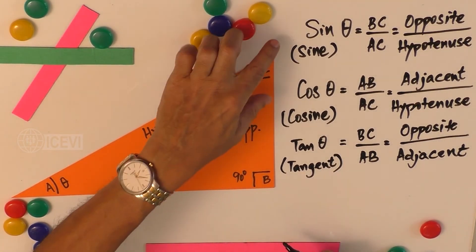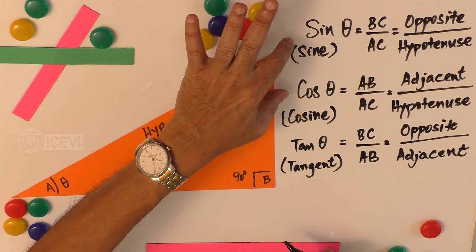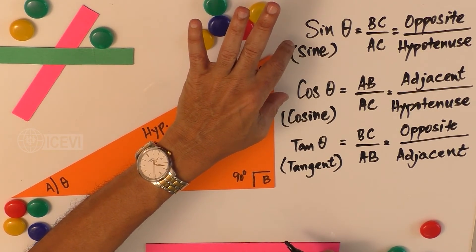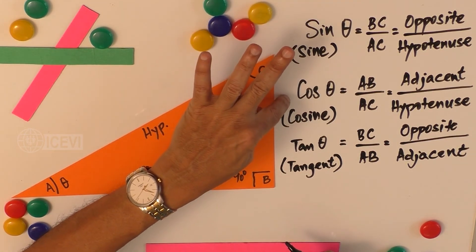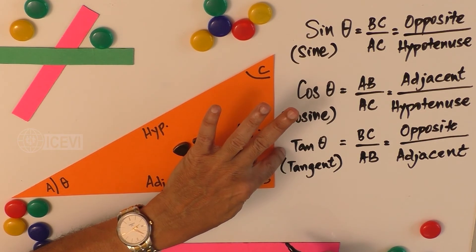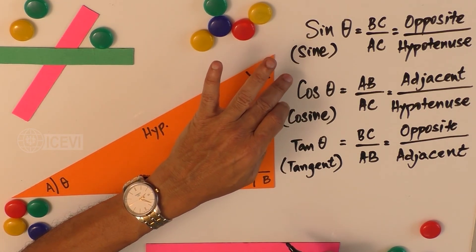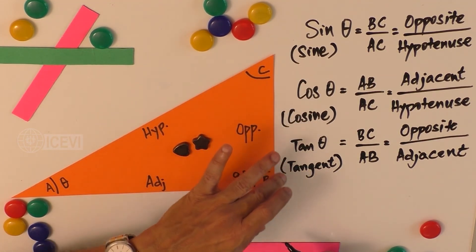So we have found out the formula for finding out the sine theta, cos theta, and tan theta, which is nothing but sine, cosine, and tangent.